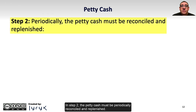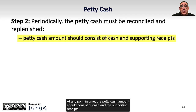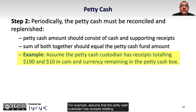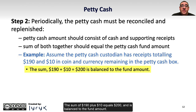In Step 2, the petty cash must be periodically reconciled and replenished. At any point in time, the petty cash amount should consist of cash and the supporting receipts, and when totaled together, the sum should equal the petty cash fund amount. For example, assume that the petty cash custodian has receipts totaling $190 and $10 in coin and currency remaining in the cash box. The sum of $190 plus $10 equals $200 and is balanced to the fund amount.